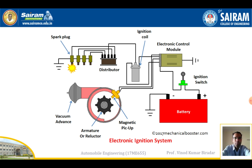The ignition coil consists of two parts: primary winding and secondary winding. A new part called the armature or reluctor is also connected here. In the previous battery and magneto ignition systems, a capacitor or condenser was used; in the electronic ignition system, an armature is used in its place. It consists of a vacuum unit and a magneto pickup point. The distributor is connected to each spark plug to ignite the spark in the engine.